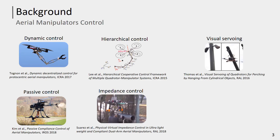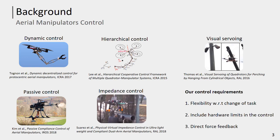Looking at the state of the art of aerial manipulator control, several control strategies have been proposed — from controllers that exploit robot dynamics and passivity properties, to hierarchical and impedance control, to visual servoing. In this paper, we would like to complement the state of the art by designing a controller that ensures greater flexibility with respect to a change of task, the possibility to easily include hardware and software limitations in the control design, and the addition of direct force feedback.